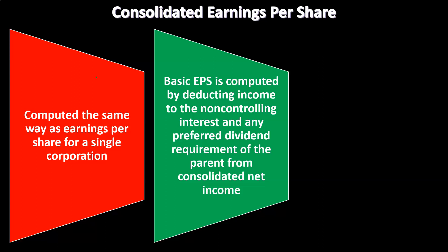The basic earnings per share is computed by deducting income to the non-controlling interest and any preferred dividend requirement of the parent from the consolidated net income. So we're going to take the net income and then deduct income to the non-controlling interest and any preferred dividend requirement.